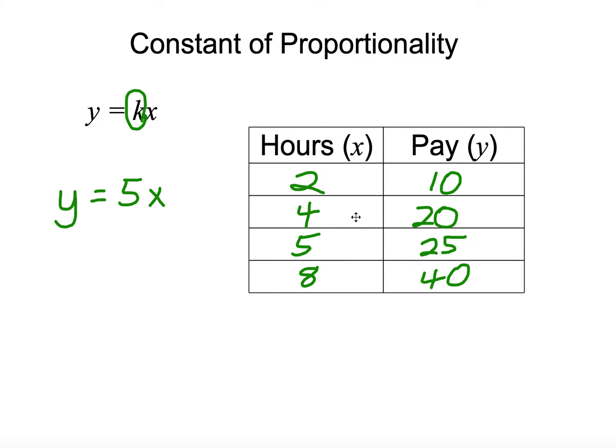So our input is the x, that's the amount we put into the equation, we take it times k, the constant, or the constant of proportionality, and our output is y, or our pay here. As you see, this is a ratio from the hours we worked to the amount that we were paid.